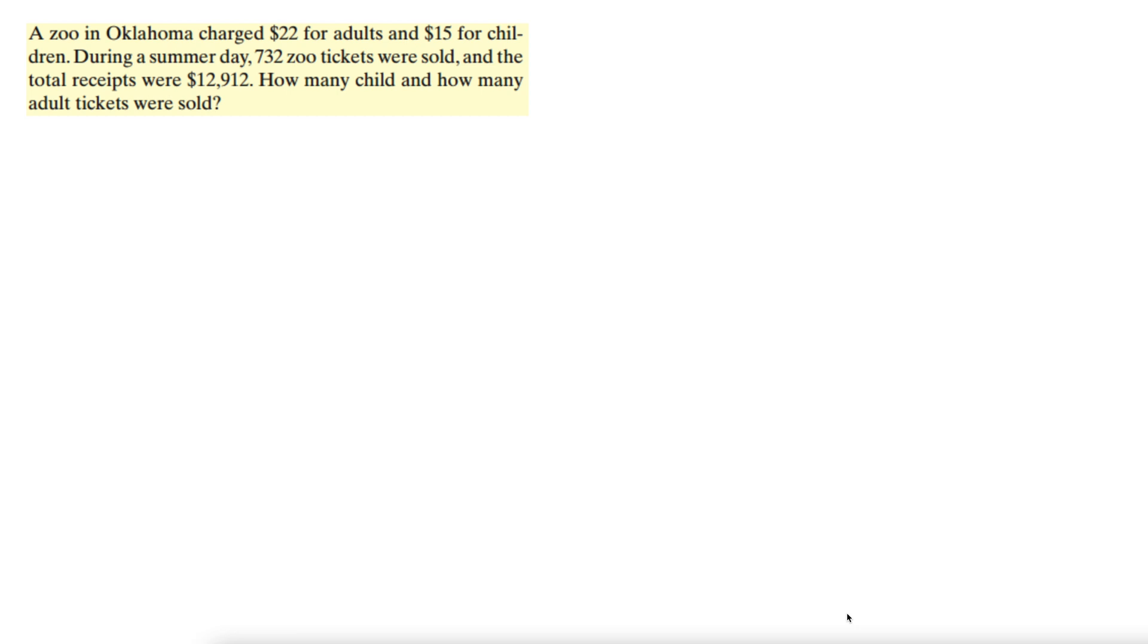Here's a different kind of problem. A zoo in Oklahoma charged $22 for adults and $15 for children. During a summer day, 732 zoo tickets were sold, and the total receipts were $12,912. How many child and how many adult tickets were sold?